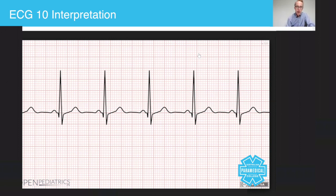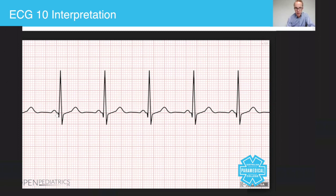The first thing you look at is the rate. The second thing is: is there a P wave in the ECG? You have to ask yourself, is there a P wave before every QRS? Yes — that means the atria are contracting. Is the P wave nice and round? Yes. Is the PR interval less than five small squares? Yes, it is — so that's perfect.